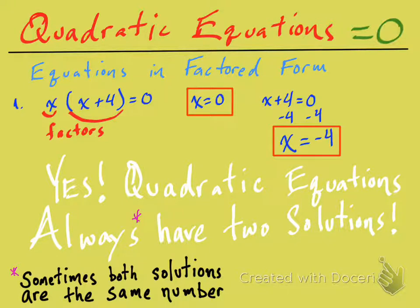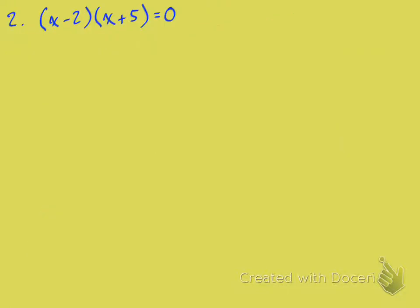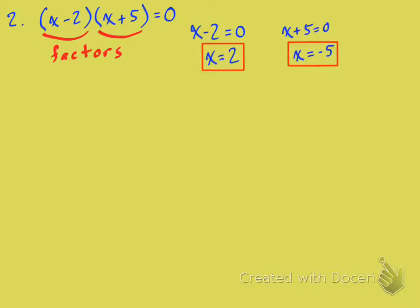Let's do another one: (2x minus 2) times (x plus 5) equals zero. You set your factors equal to zero and solve those little equations. It's pretty simple.